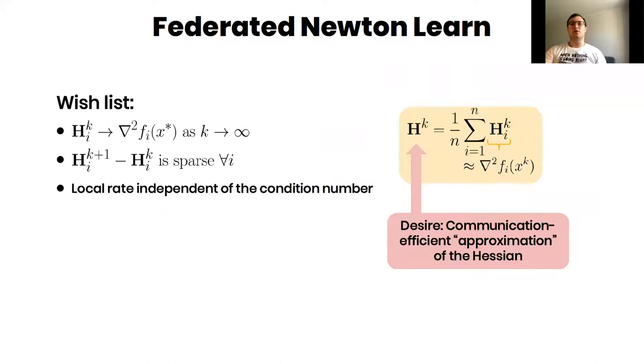This leads to Federated Newton Learn. We find matrices H_i^k, and each of them should go to the Hessian at the optimum of corresponding loss function f_i. But the update H^{k+1} minus H^k should be sparse, and the local rate should be independent on the condition number.